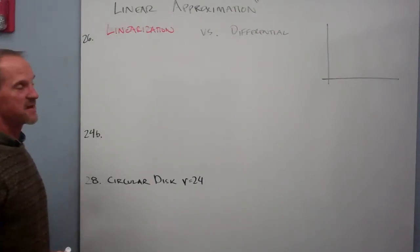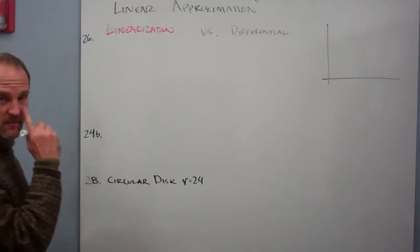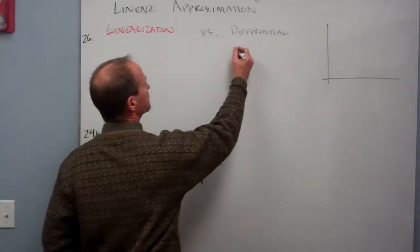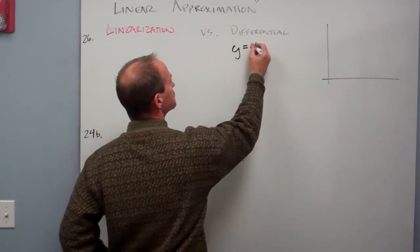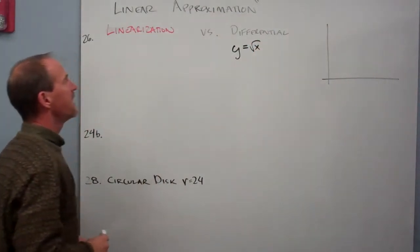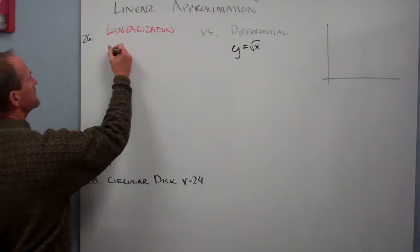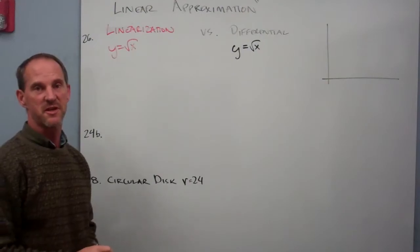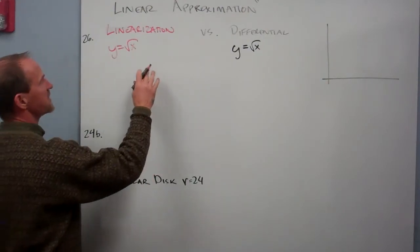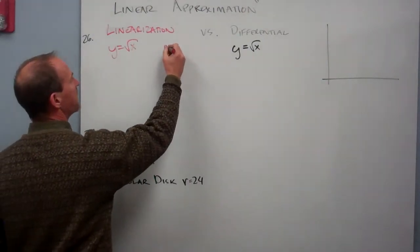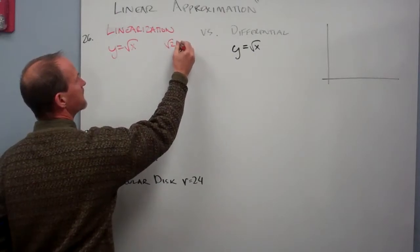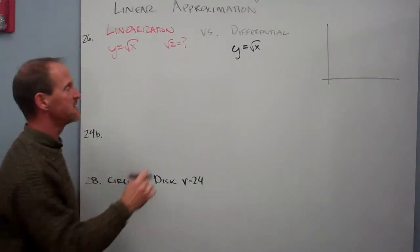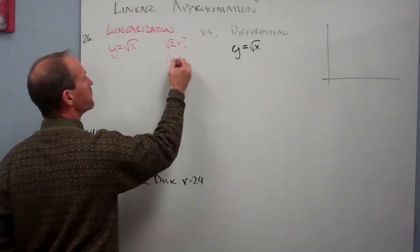In this case, the simple example I want to use is from number 26 in our text. Suppose we have, and I will write in black for linearization, y equals radical x. I'll review this with linearization first, just to compare the two. We're going to use this to find radical 2, a decimal approximation of radical 2, and our simple nearest convenient point is going to be the point (1,1).